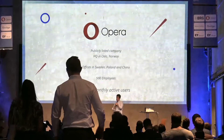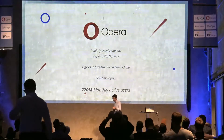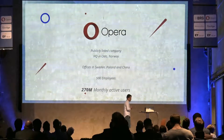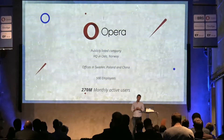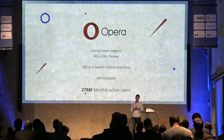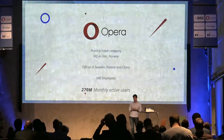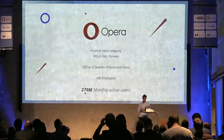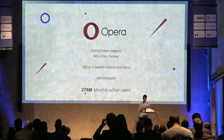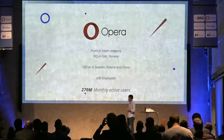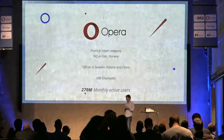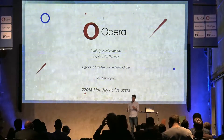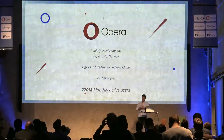You're probably familiar with Opera — it's a local name. We've been around for some time, making browsers for a long time, and we're one of the original internet companies. Our HQ is still in Oslo and we have engineering offices in Sweden, Poland, and China. I'm based in Sweden and I'm leading the product team building this crypto wallet inside the browser. We have about 500 employees and a massive user base, with over 270 million monthly active users.